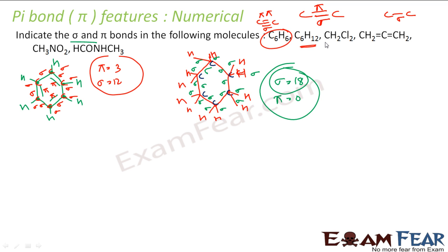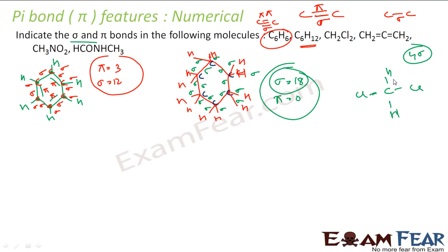Let's draw CH2Cl2. Carbon has 4 bonds and all are single bonds, so it has 4 sigma bonds. There is no pi bond — all are sigma bonds.